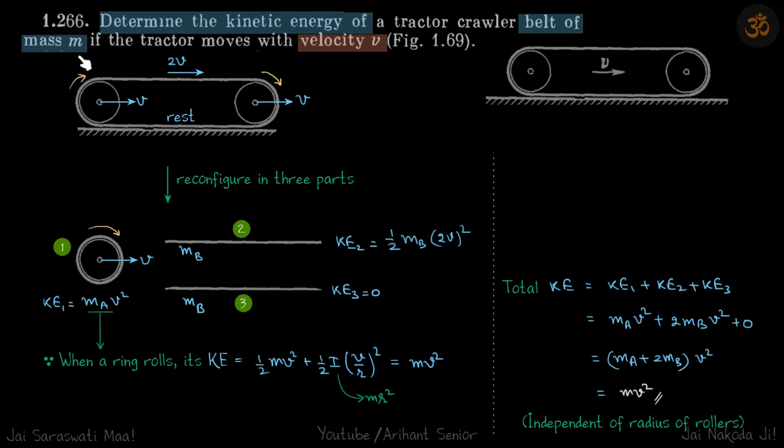The mass is m. You can see all the parts of this belt are moving with different velocities, so let's take this belt apart in four different pieces. This part of the belt, this circular part, and this circular part...